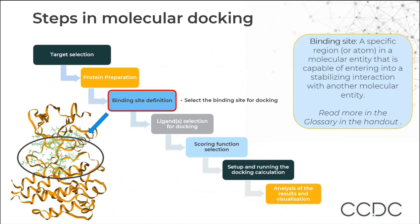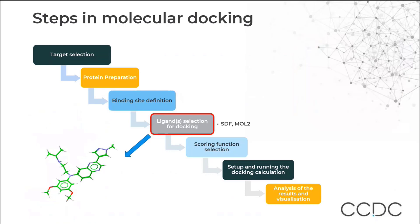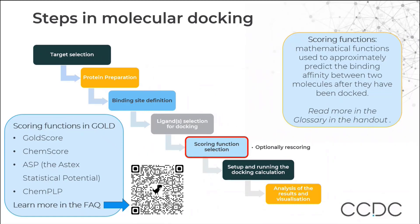The binding site is a portion or place capable of entering into a stabilizing interaction with another molecular entity. You then select the ligand from your dataset, database, or as a single ligand — this ligand could be in SDF, MOL or MOL2 format. We also have the option of selecting various scoring functions. A scoring function is a mathematical function used to approximately predict the binding affinity between two molecules — the protein and the ligand — after they have been docked.